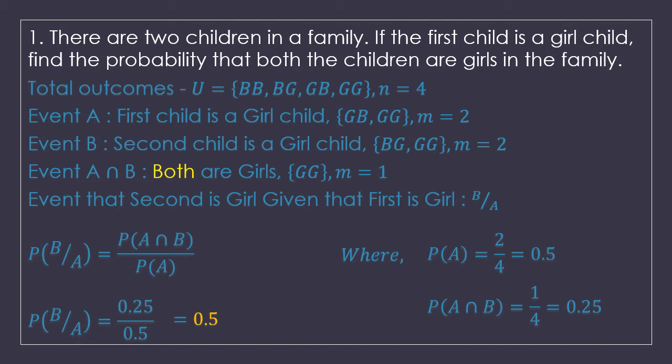So how are you supposed to understand this type of question? First, words like 'if' or 'given' in the question indicate that this is a conditional probability. Second, you will be given two events — one of the events has already happened. For example, 'if the first child is a girl-child' means it has already happened. The event you are supposed to calculate will be in the numerator. The event which has already happened — the given event — will be in the denominator. That way you can frame your conditional probability question. Let us take one more to understand it.